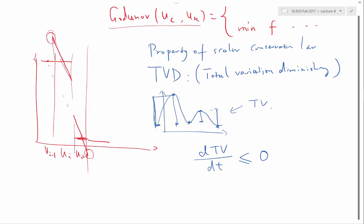So the key to producing a non-oscillatory scheme is to somehow preserve this TVD property. The only stage in the finite volume scheme where this property can be violated is in the reconstruction step. For example, the original function is a discontinuous function like this, but after the reconstruction, you create this overshoot and this undershoot.